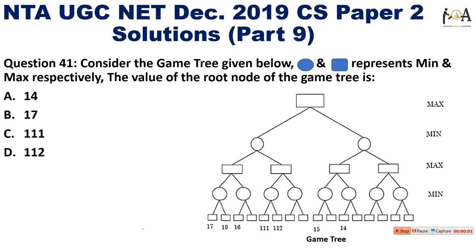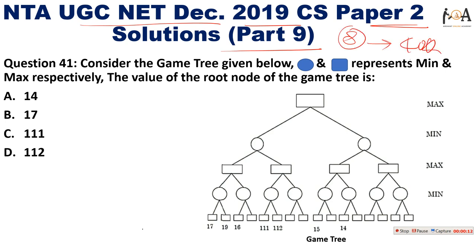Hi guys, very warm welcome to Rehant Online Academy. This is Part 9 for UGC Net December 2019 Computer Science Paper 2. In the previous 8 parts we discussed the first 40 questions, and the links for those parts are given in the description section so you can watch them and get the solutions.